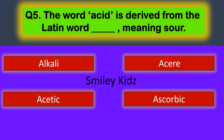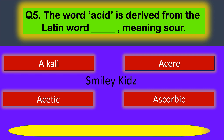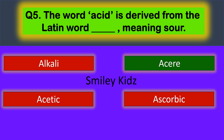Question number five: the word acid is derived from the Latin word dash, which means sour. Your time starts now. The correct answer is Acere. The word acid is derived from the Latin word Acere, meaning sour.